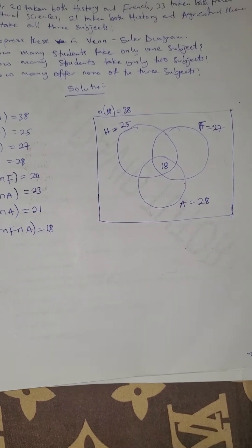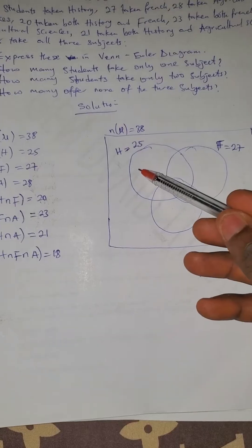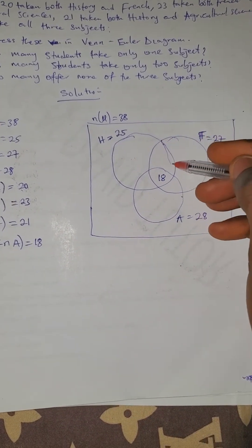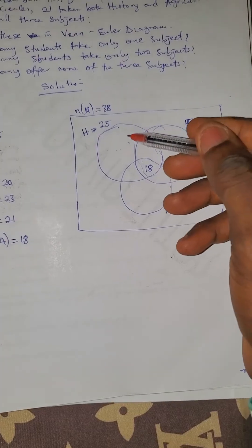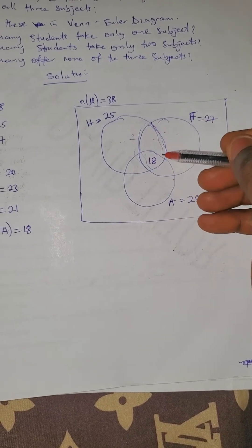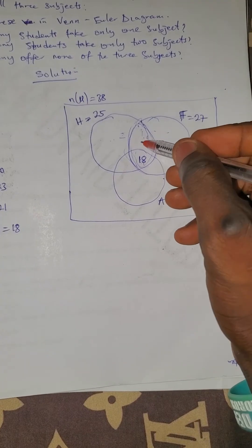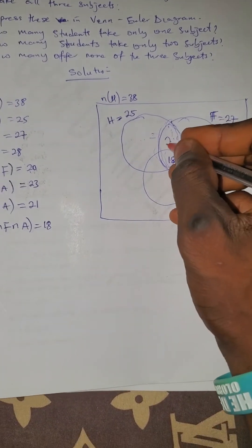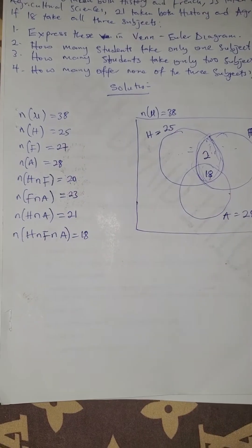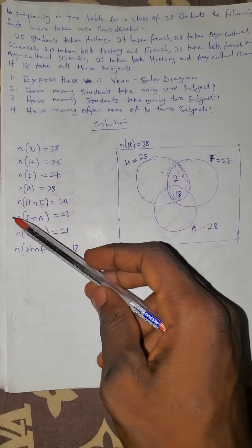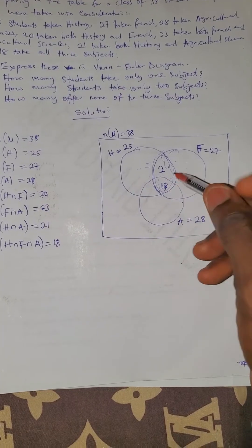History and French together is 20. This region covers where the History and French circles intersect. Since the all-three region is 18, the History and French only region is 20 minus 18, which equals 2. So adding 2 plus 18 gives us 20, confirming History intersection French.